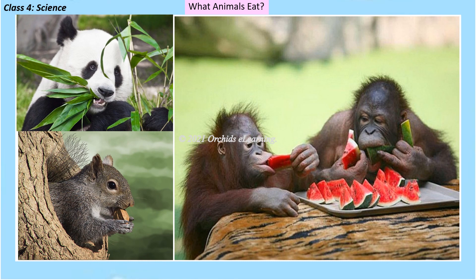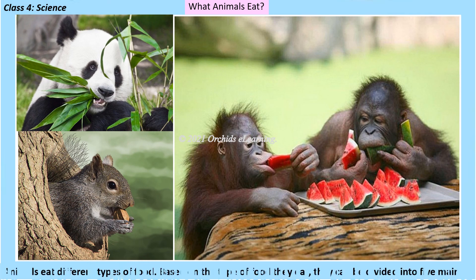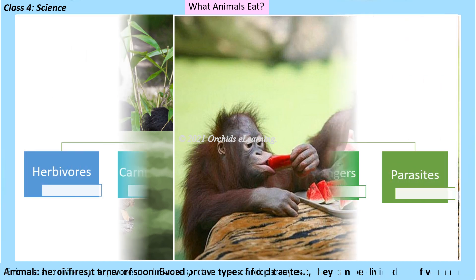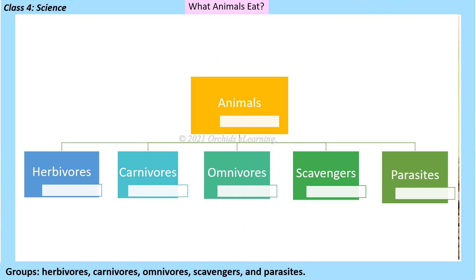What animals eat: animals eat different types of food. Based on the type of food they eat, they can be divided into five main groups: herbivores, carnivores, omnivores, scavengers, and parasites.